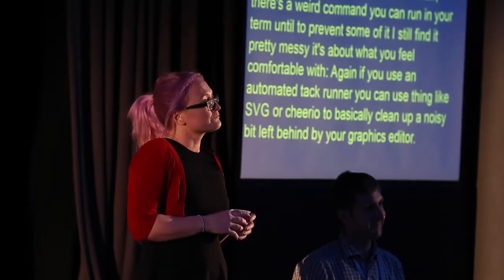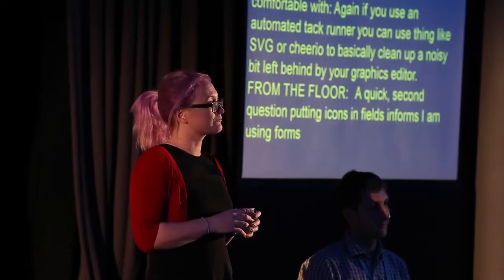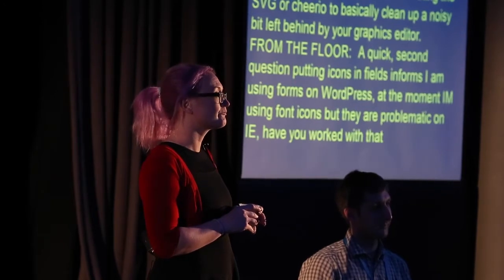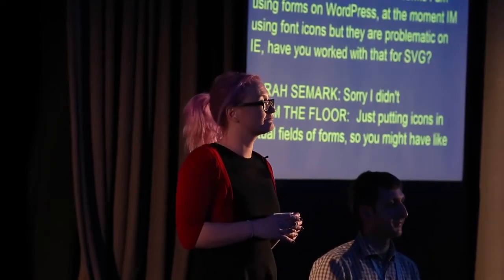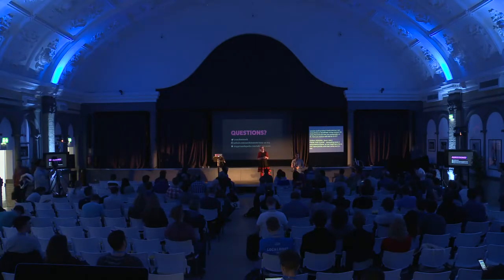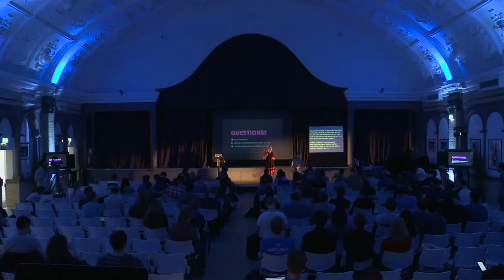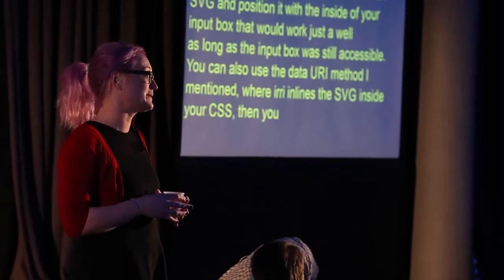A quick question about putting icons in form fields — I'm using Gravity Forms on WordPress and I want nice little user icons, but I'm using font icons and they're problematic on IE. Have you worked with SVG for putting them in fields? You'd need to look at that and determine which method would work best. You could just take an SVG and absolutely position it inside your input box — that would work just as well, so long as the input box was still accessible. You can also use the data URI method, where it inlines the SVG inside your CSS, and then position it as a background element.